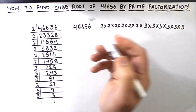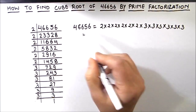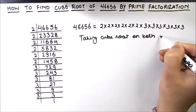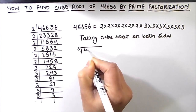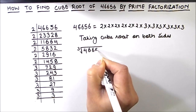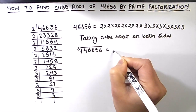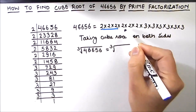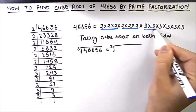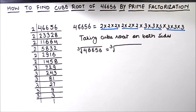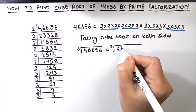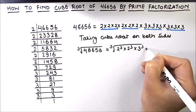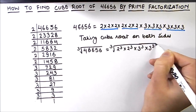Now as we have to find the cube root, we will take the cube root on both sides. So we have the cube root of 46,656 equal to the cube root of these prime factors. As we are taking the cube root, we can write these numbers as cubes: 2 cubed times 2 cubed, times 3 cubed times 3 cubed, all under the cube root sign.